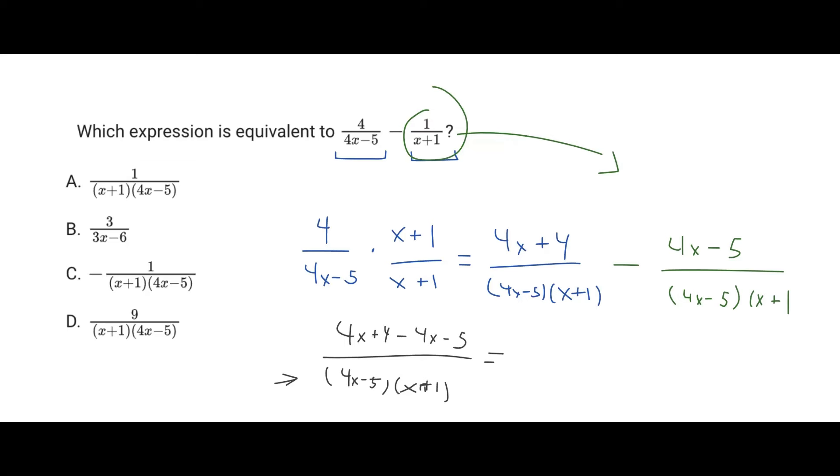So with 4x minus 4x, those two are going to cancel. So that's just going to be 0. But now in our case, we have 4 minus negative 5. So we're really just adding 5 to 4. That's going to be 9.